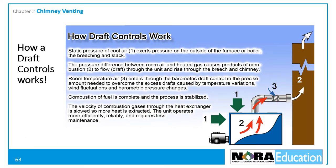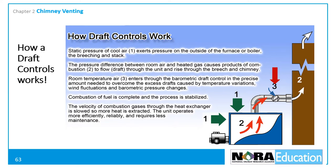This illustration shows the operation of a draft control. The static pressure of cool air exerts pressure on the outside of the appliance, the breaching, and the flue pipe. The pressure difference between room air and combustion gases causes the gases to flow through the appliance and rise through the flue and chimney. Room-temperature air enters through the draft regulator in the precise amount needed to overcome excess draft caused by temperature variations, wind fluctuations, and barometric pressure changes. The result is that the velocity of combustion gases through the heat exchanger is slowed, more heat is extracted, and the unit operates more efficiently, more reliably, and requires less maintenance.